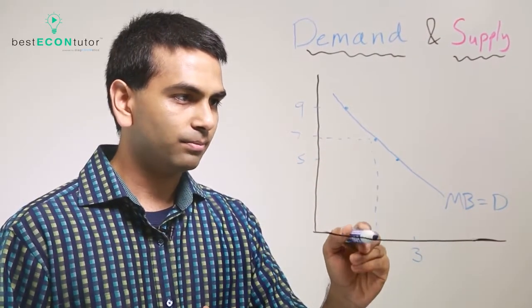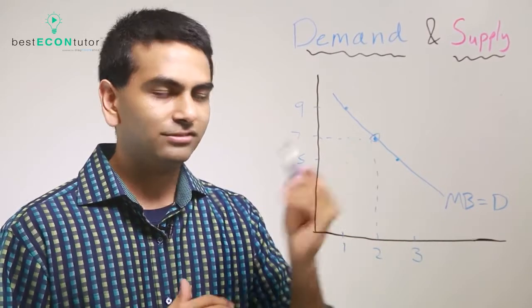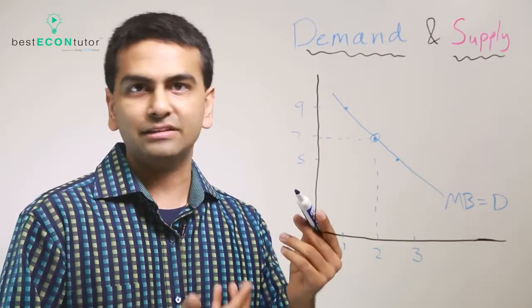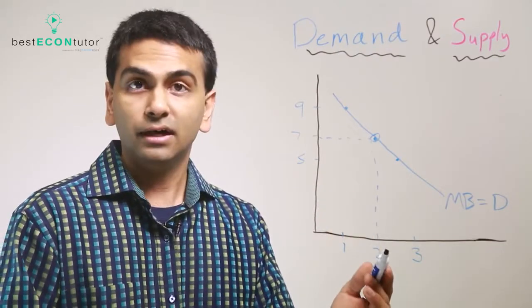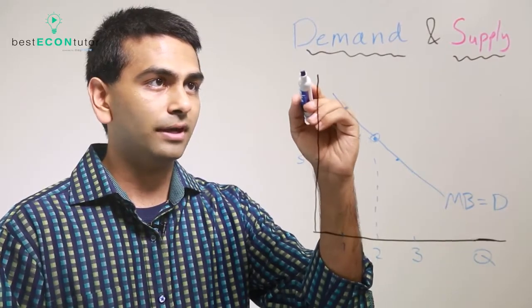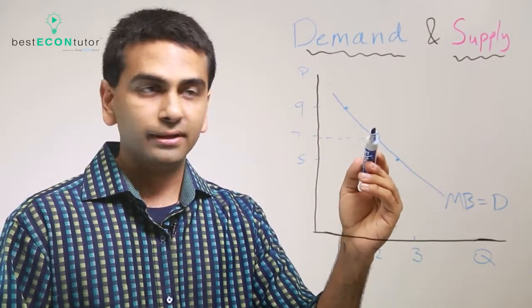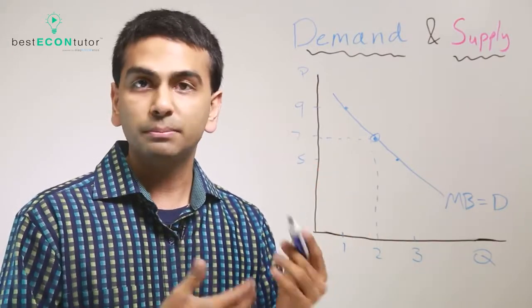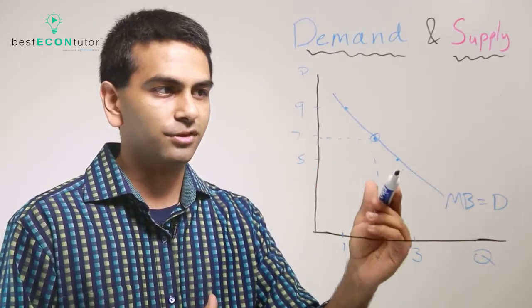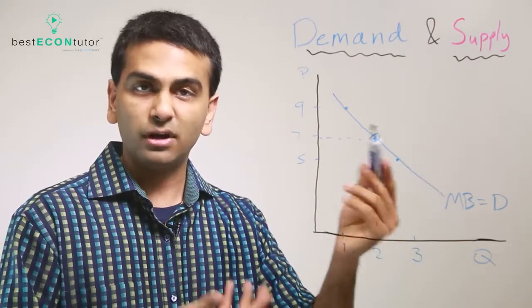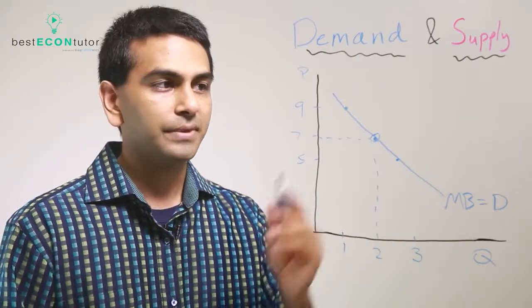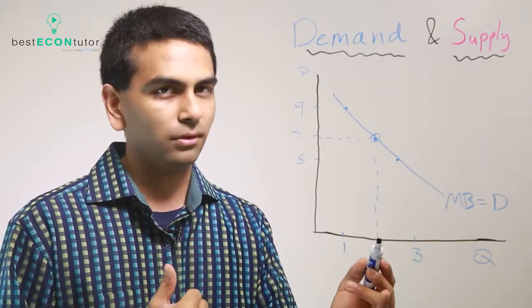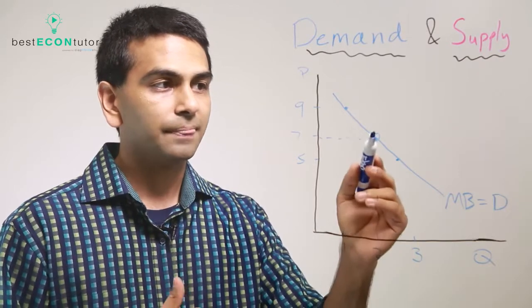If you take any given point, let's say this point two comma seven, there are two different ways to interpret it. One way is if the price of pizza was seven dollars each, you'd want to buy a quantity of two slices—the third one wouldn't be good enough. Another way to interpret this point is that the second slice alone gives you a seven dollar happiness.